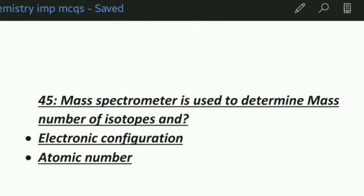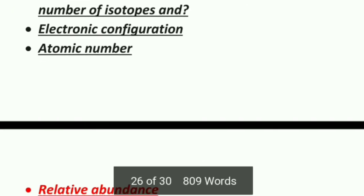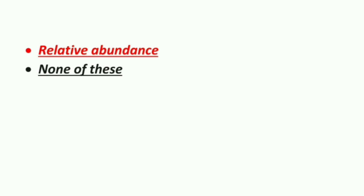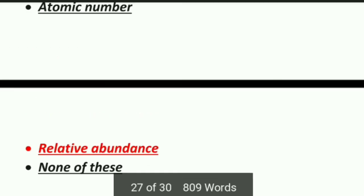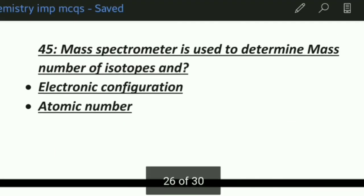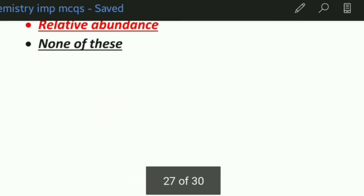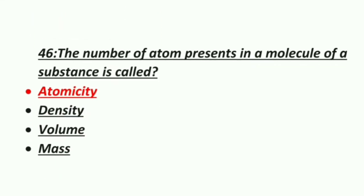Forty-fifth MCQ: a mass spectrometer is used to determine the mass number of an isotope and — Option 1: Electronic configuration, Option 2: Atomic number, Option 3: Relative abundance, Option 4: None. The correct answer is relative abundance.